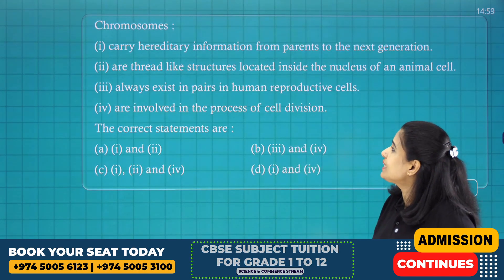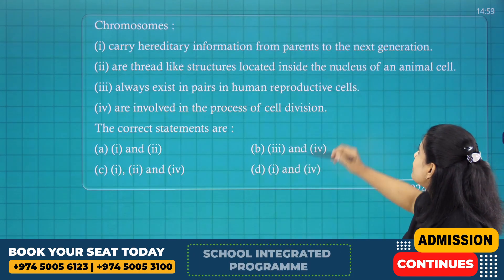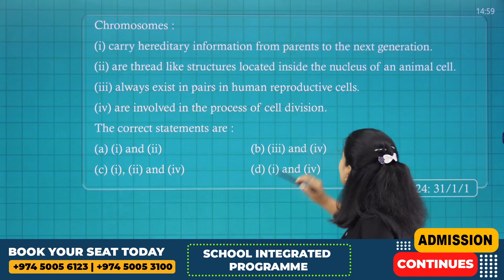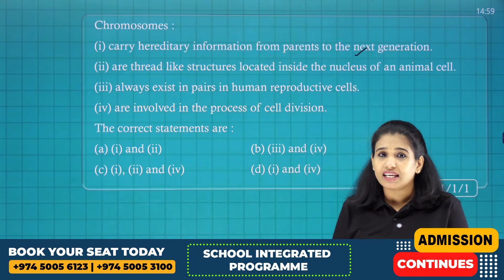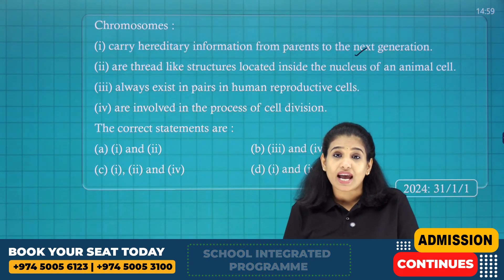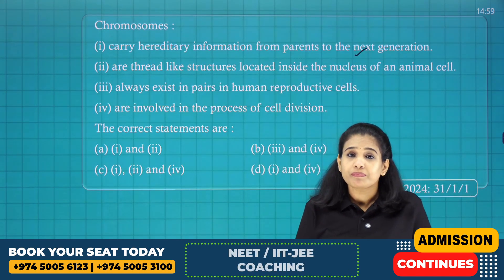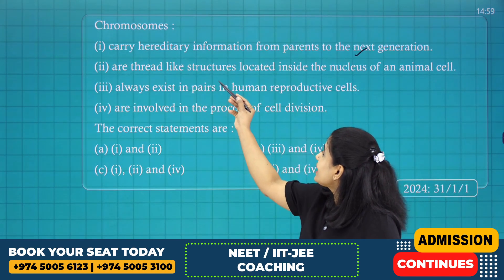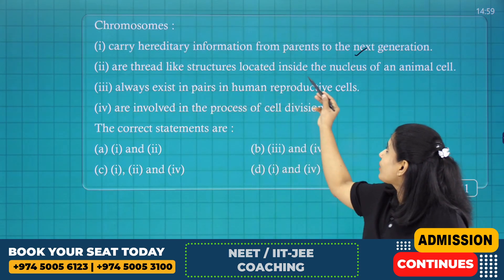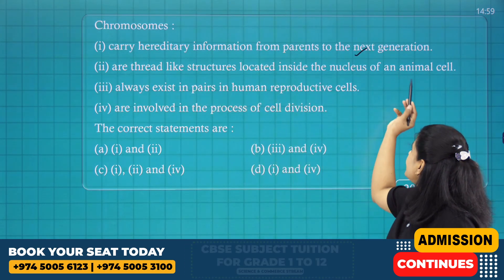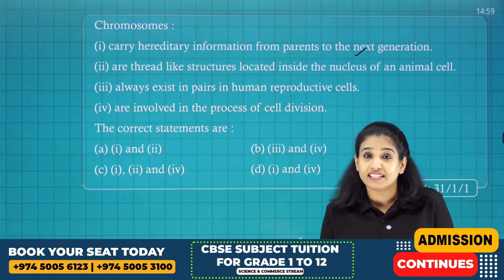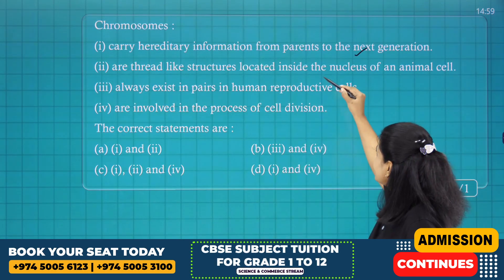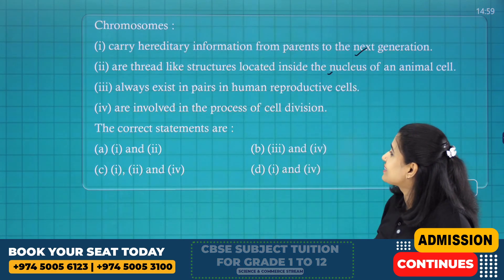Statement 1 — chromosomes carry hereditary information from parents to the next generation — yes, that is correct. Statement 2 — they are thread-like structures located inside the nucleus of an animal cell — yes, they appear as thread-like structures, so that is also correct.